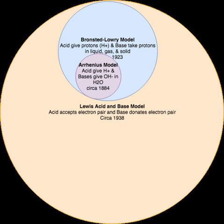As an example of water acting as an acid, consider an aqueous solution of pyridine, C5H5N: C5H5N + H2O → C5H5NH+ + OH−. In this example, a water molecule is split into a hydrogen ion, which is donated to a pyridine molecule, and a hydroxide ion. In the Bronsted-Lowry model, the solvent does not necessarily have to be water, as required by the Arrhenius acid-base model.